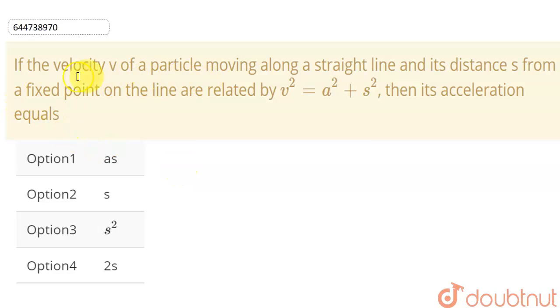So students, in this question we are given that the velocity, represented by v, of a particle moving along a straight line and its distance s from a fixed point on the line are related by the equation v² = a² + s².